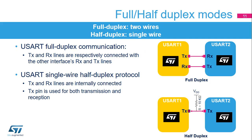The USART supports full duplex communication, where TX and RX lines are respectively connected with the other interface's RX and TX lines. The USART can also be configured for single-wire half-duplex protocol, where the TX and RX lines are internally connected. In this communication mode, only the TX pin is used for both transmission and reception. The TX pin is always released when no data is transmitted, acting as a standard I/O in idle or reception modes. The I/O must be configured so that the TX pin is set as alternate function, open drain, with an external pull-up.